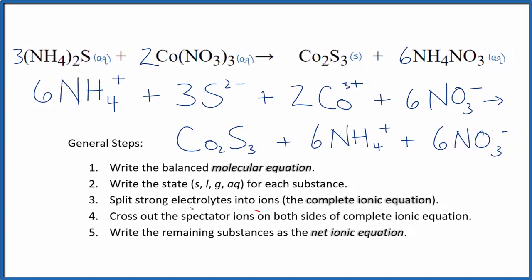Now we can cross out the spectator ions. They're on both sides of our complete ionic equation. In the reactants here, I have six ammonium ions. I also have six ammonium ions here in the products. Those are spectator ions. We can cross those out.